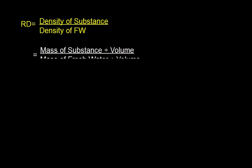We can write that RD, relative density, is density of substance divided by density of fresh water. That can be written as mass of substance divided by volume, because density is mass divided by volume. So density of substance means mass of substance divided by volume, and density of fresh water means mass of fresh water divided by volume.